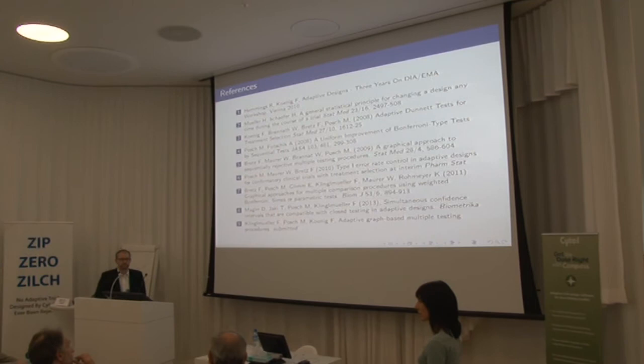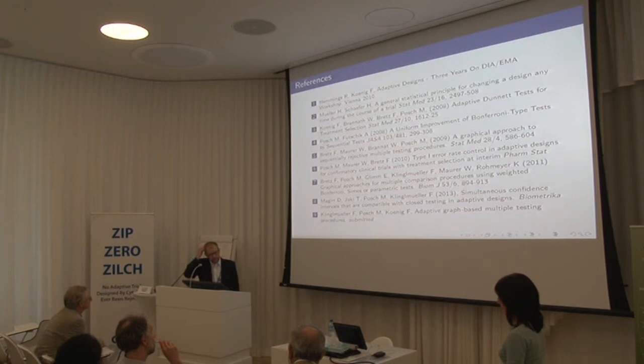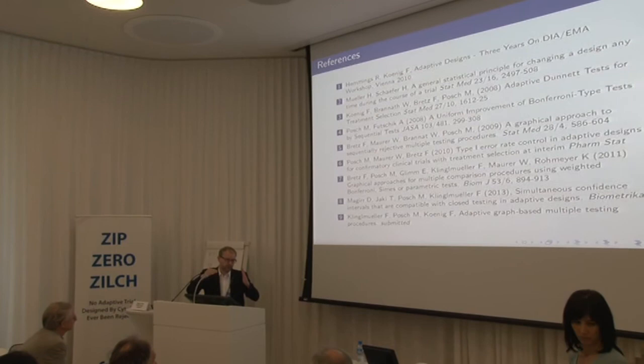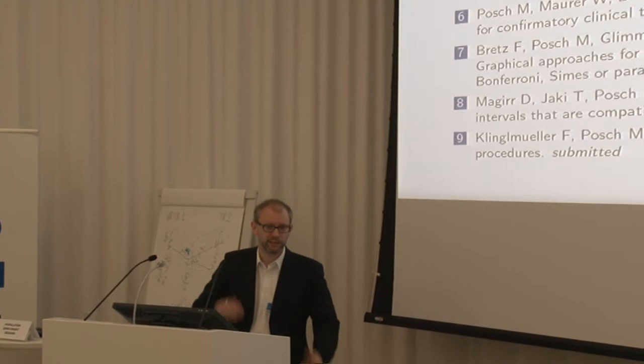Audience question: why is it not possible to include the adaptation into the graph itself, rather than going through all the intersection hypotheses? Answer: it is not possible because each intersection hypothesis has a different conditional error. With the initial graph, alpha is simply passed around, but now the conditional error differs for each intersection — you cannot simply pass the first conditional error over to the next one. We tried to do so but failed completely.